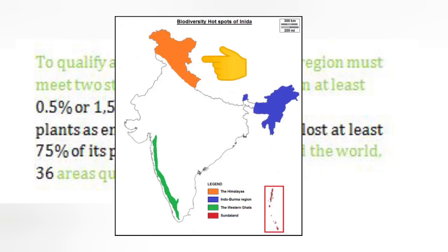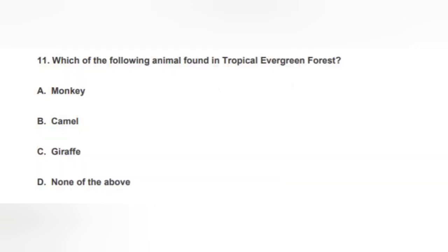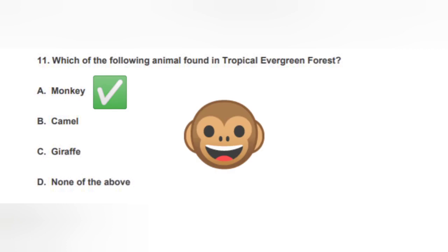India has four biodiversity hotspots: the Himalayas in the north, the Western Ghats in the south, Sundaland — made up of the Nicobar Islands — and the Indo-Burma region in the east. The next question is: Which of the following animals is found in the tropical evergreen forest? We can eliminate camel, which lives in scrub or thorn forest in desert areas, and giraffe, which is found in savannah or open woodlands. The correct answer is the monkey.